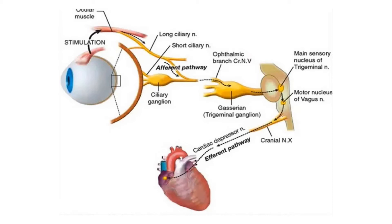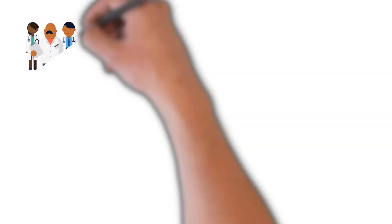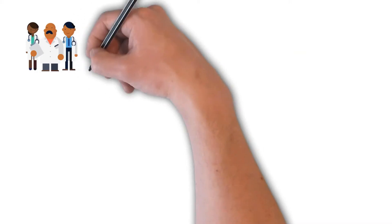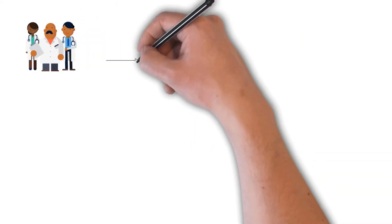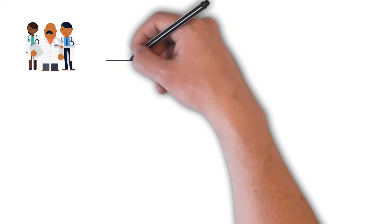Then the efferent pathway starts via the motor nucleus of the vagus nerve. The vagus, as you know, is a parasympathetic nerve, leading to negative inotropic and chronotropic effects, and hence depresses the cardiac muscles.